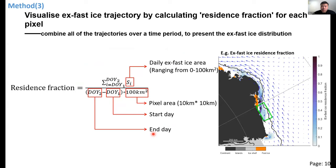Since fast ice breakup is a continuous process — starting at different times — a residence fraction metric was defined to assemble the trajectories and display broken fast ice density. The residence fraction is calculated as the daily ex-fast ice area summed together and divided by pixel area and time, giving a fast ice density in each pixel.